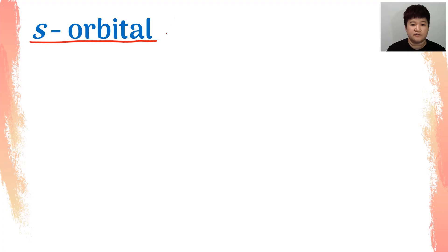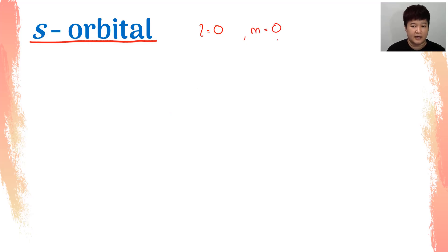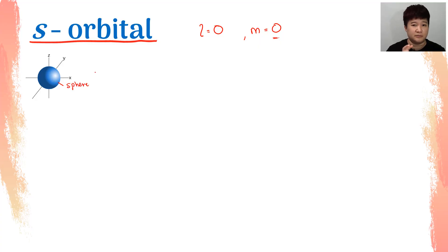Let's start off with the S orbital. The S orbital means L equals to 0. And when L equals to 0, M is equals to 0. Therefore, you only have one orientation for the S orbital. The S orbital is in the sphere shape, so no matter how you put the sphere shape, it will still be in the same arrangement.